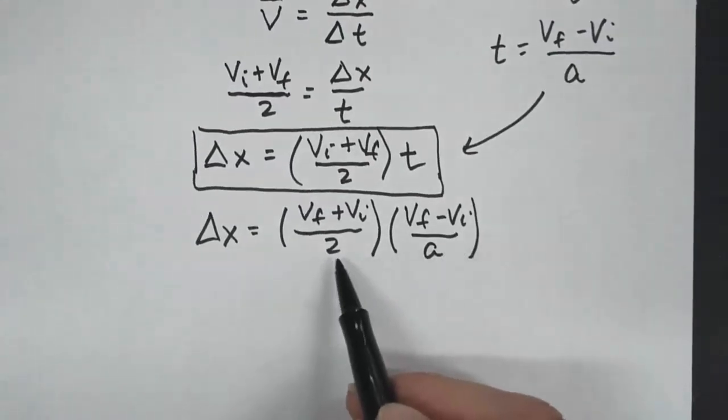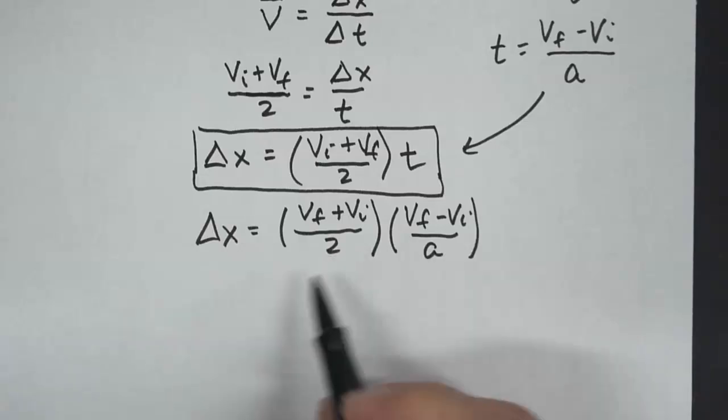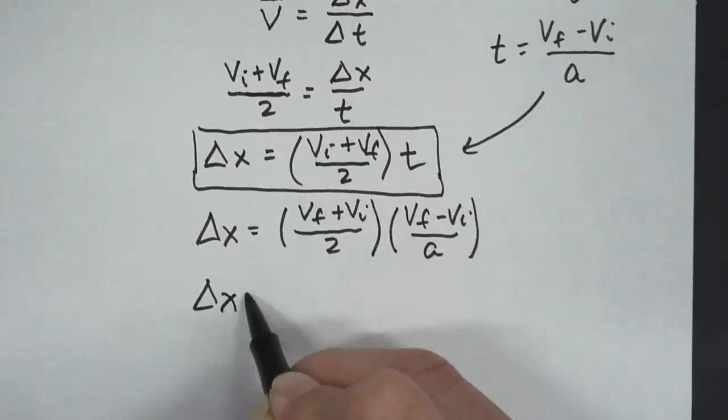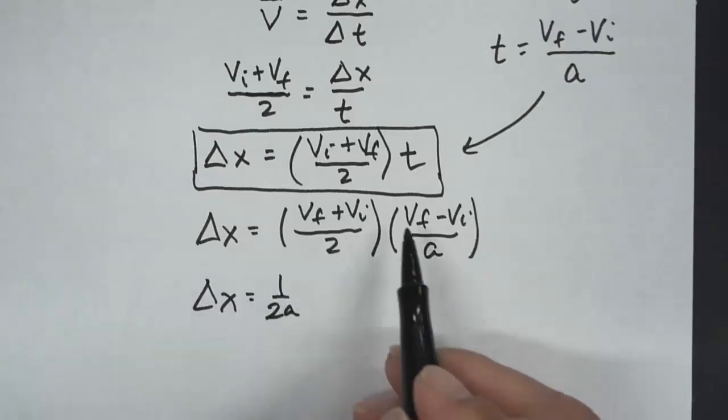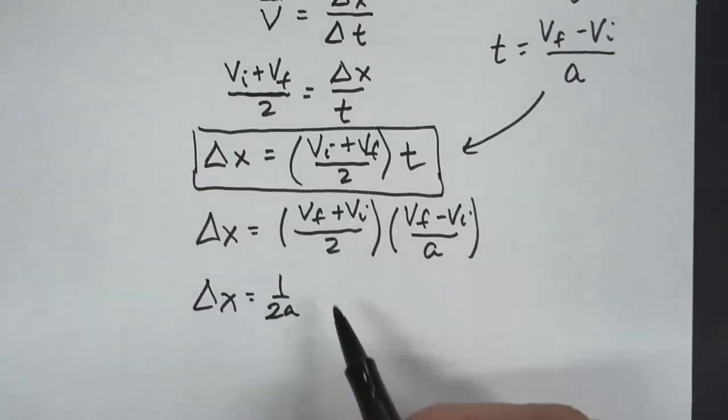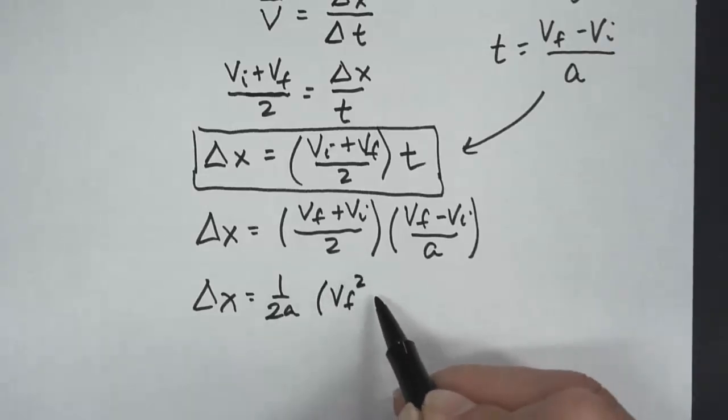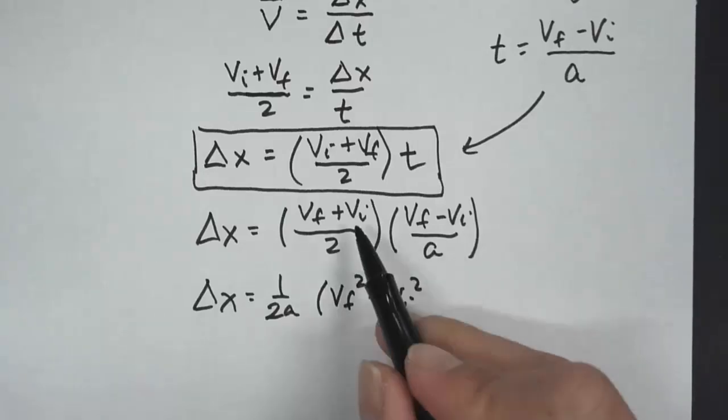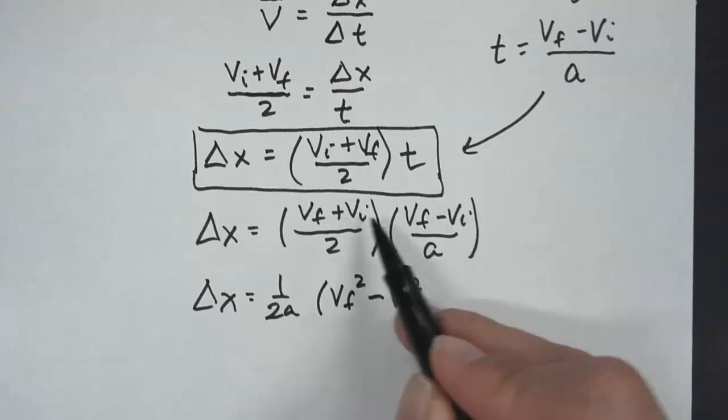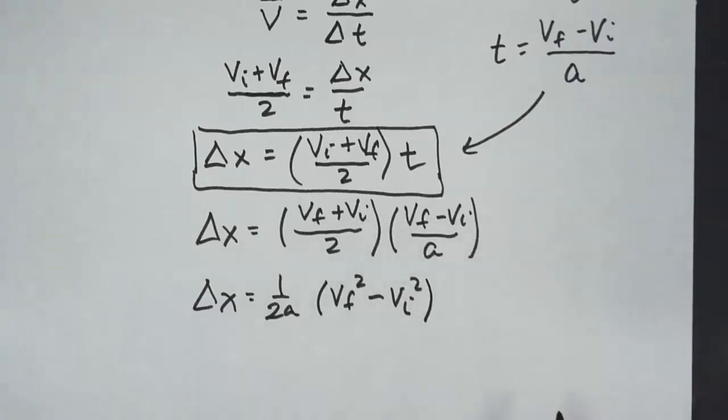So now I'm going to distribute out, the factor out the 2a, I'm going to bring that out to the front. So that's going to be 1 over 2a. And then I'm going to multiply these two, you can use FOIL, but what you're going to end up with is vf squared minus vi squared. The vi vf will be subtracted out by another vi vf, so those will cancel each other out.